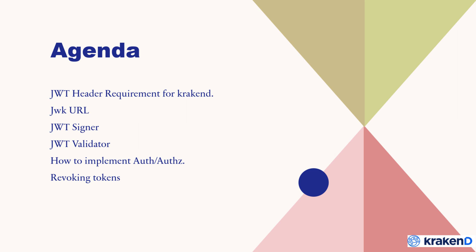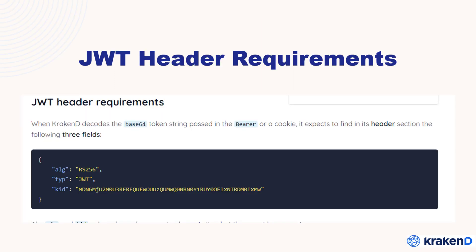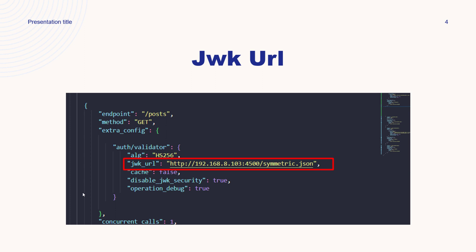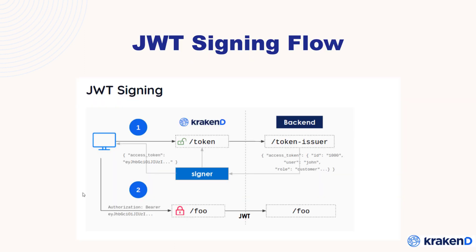We will also look into revoking tokens. The header requirement for KrakenD is the JWK URL, which actually points to our backend service. We have exposed a symmetric.json file and it will point to that.